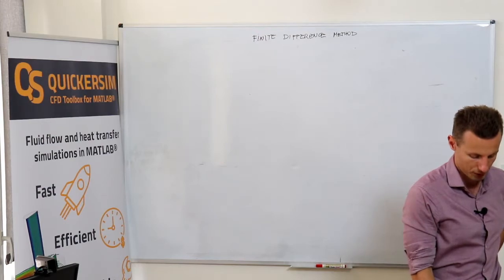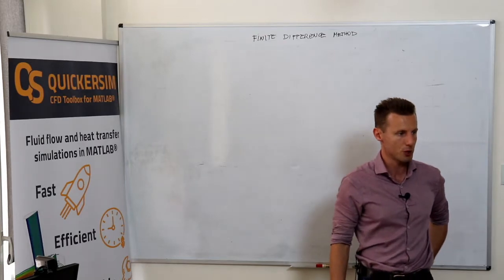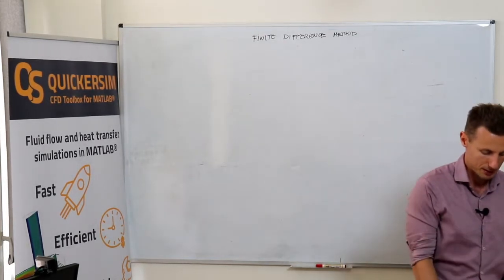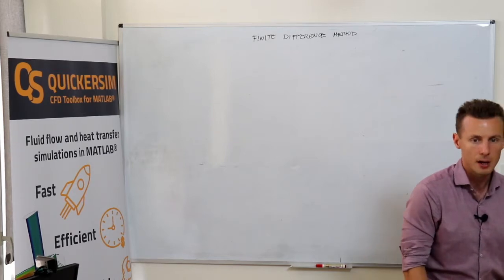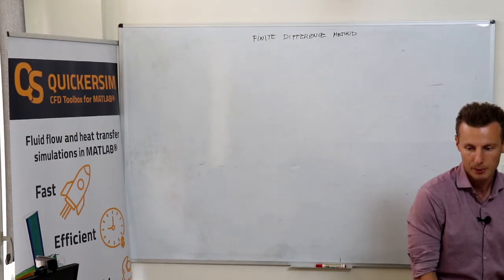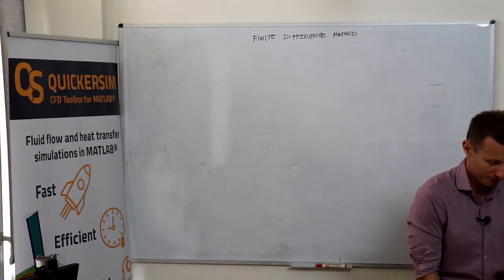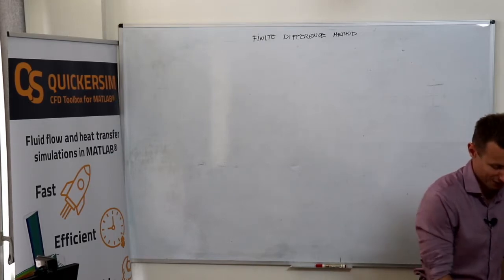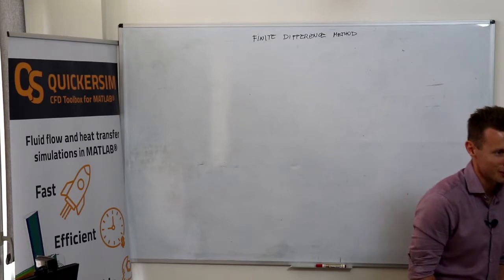I just want to make sure that you really understand the numerical instabilities, the wiggles, and the artificial diffusion that arise. I want to make sure that you know how to implement the boundary conditions and how to generate the matrix for the system. If something isn't clear, please stop me immediately.